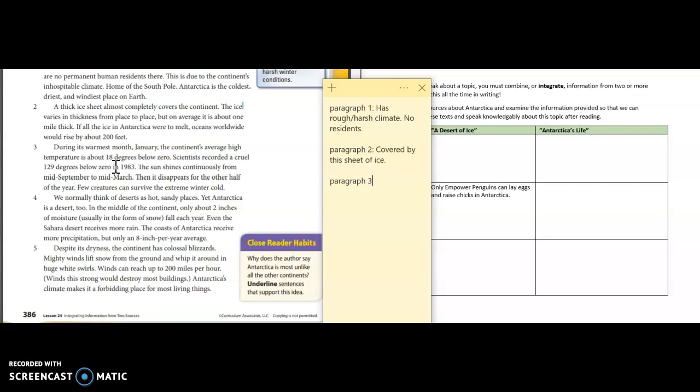Wow, so during the warmest month on this continent it's still 18 degrees below zero. That's unreal. The sun shines continuously, meaning non-stop, from mid-September to mid-March. That's weird. So as a good reader that kind of makes me go 'what?' and I have to think about it for a minute. Well if you think mid-September to mid-March, that's like September, October, November, December, January, February, March, so the sun is always shining, it never stops. Then it disappears for the other half of the year. Well what do you think happens when it disappears? It's probably dark and it's probably very cold, even colder than it is during the warmest month.